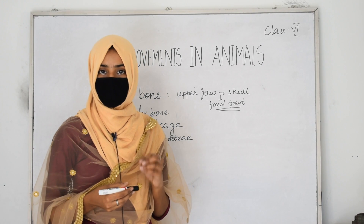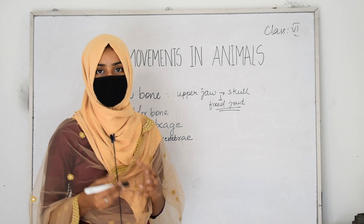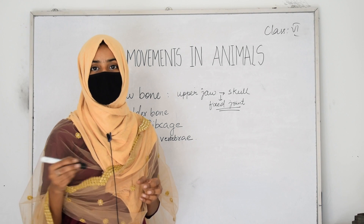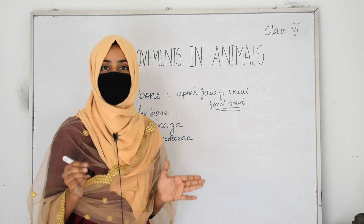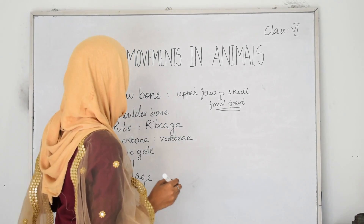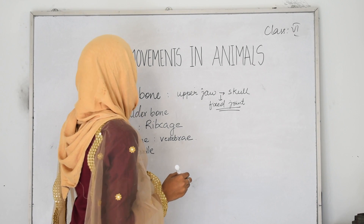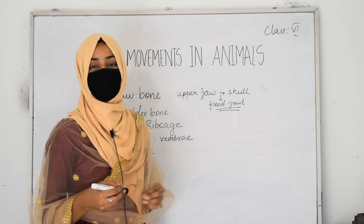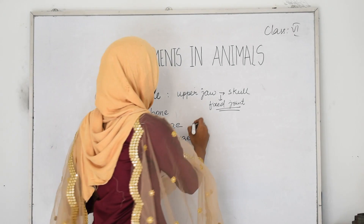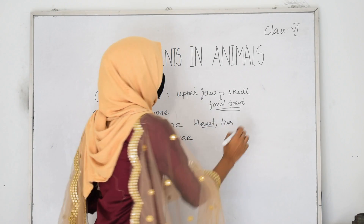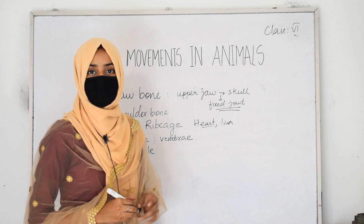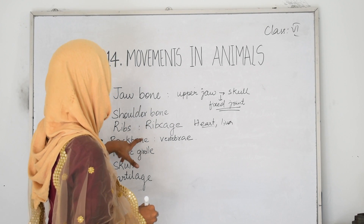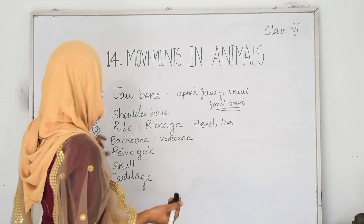The next bones are ribs. Ribs are the bones that form the rib cage. They bend towards the back side and connect the chest bone with the backbone, forming a box-like structure called the rib cage. The rib cage helps to protect our delicate organs — for example, the heart and liver — because of this box-like bony structure.